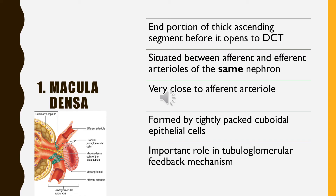The macula densa acts as a sensor which monitors the change in ionic composition and rate of flow of the tubular fluid. Thus, it provides an appropriate feedback signal to the renal corpuscle to change the rate of filtration as and when needed. So, it plays an important role in the tubuloglomerular feedback circuit.